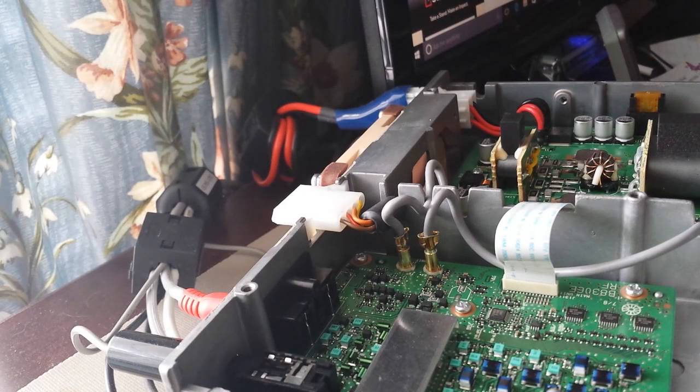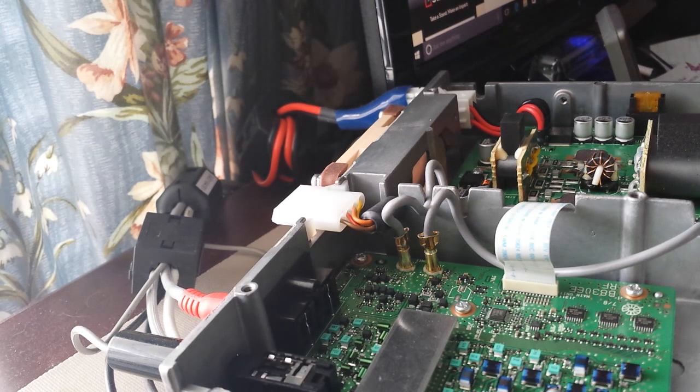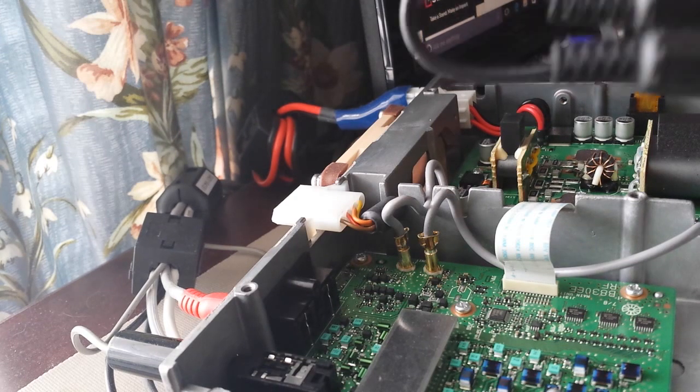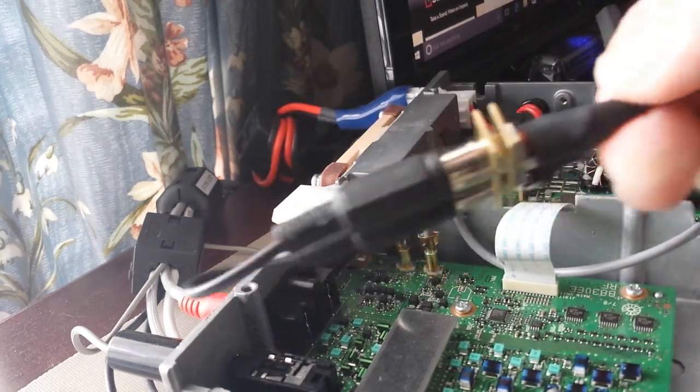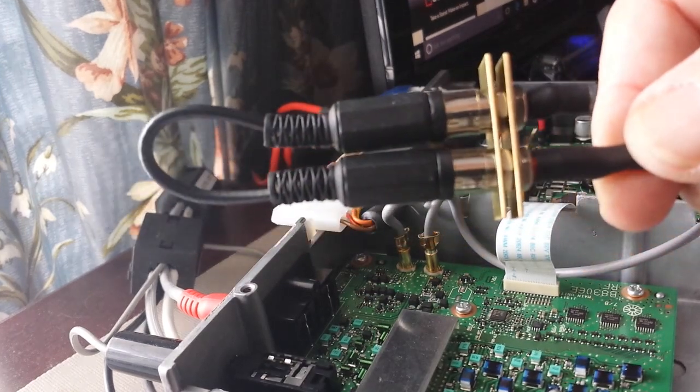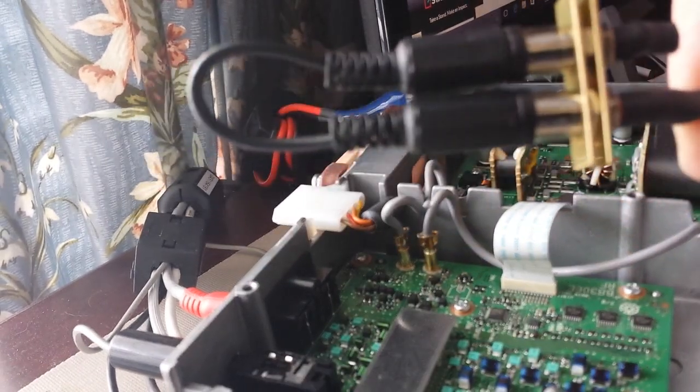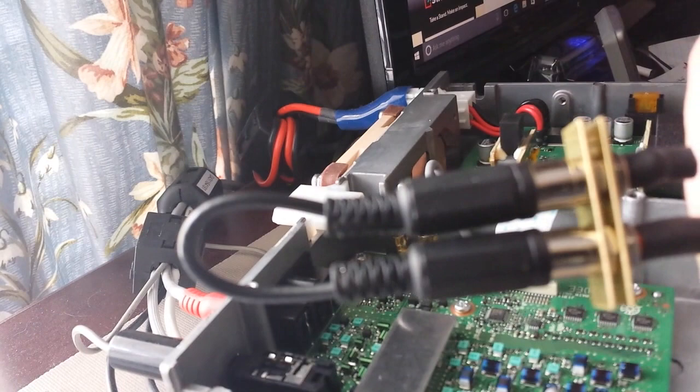Hello, this is Steve N4LQ and we're looking at the inside of an ICOM IC-7300. One of the things that people have been wanting is an external receive antenna jack. NRAD has come out with that and this is what you get when you order the NRAD RX7300.